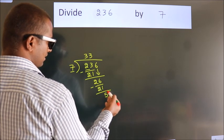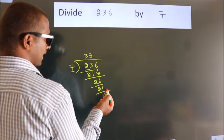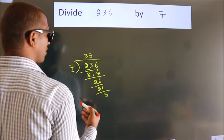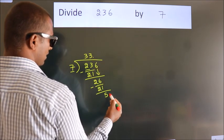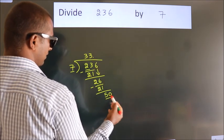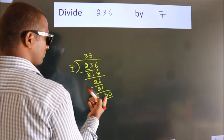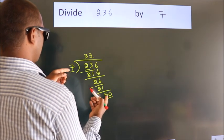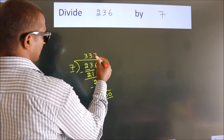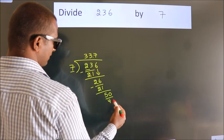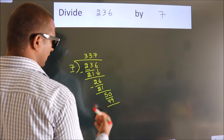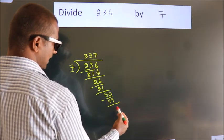After this, no more numbers to bring down. So what we do is put a dot and take 0. So 50. A number close to 50 in the 7 table is 7 sevens, 49. Now we subtract. We get 1.